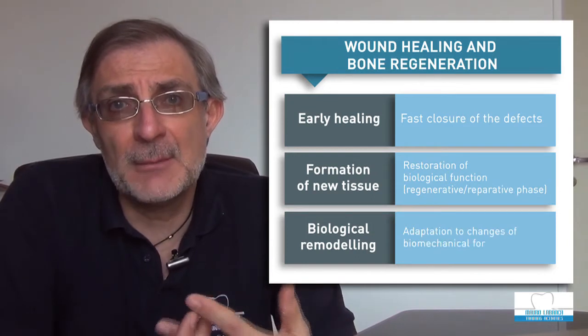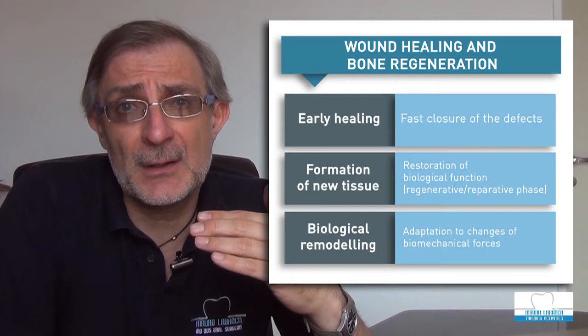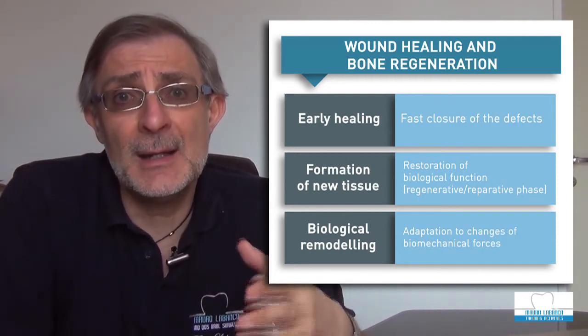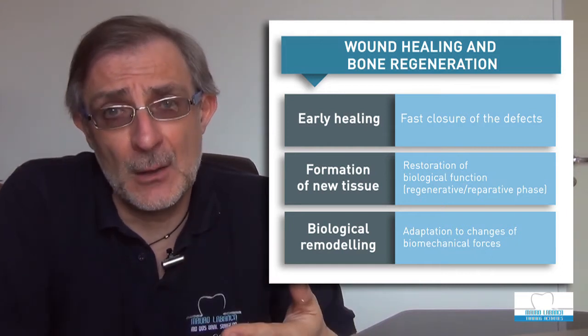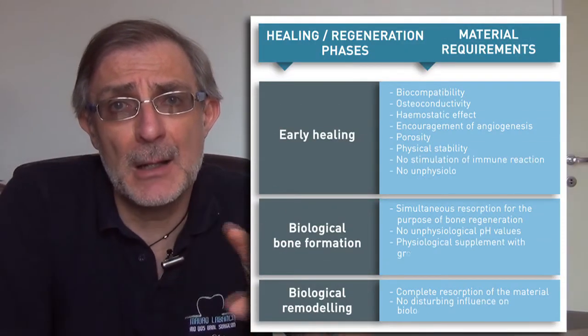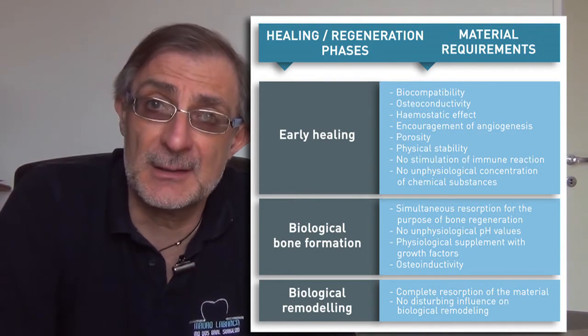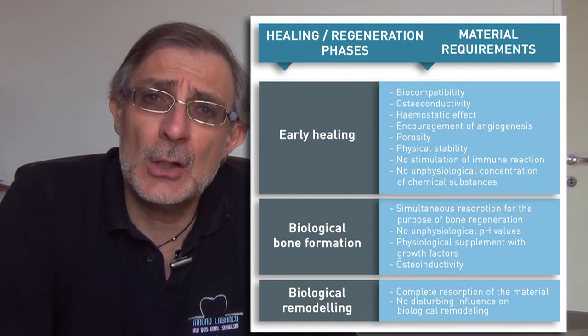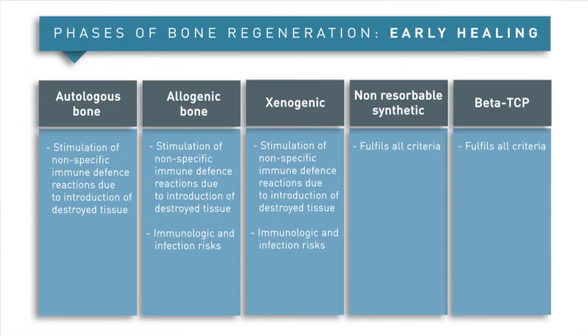Biomaterials interact with the healing processes, especially during the two first healing stages: early healing and the remodeling of bone. Going through the biological moments of the healing process, we can see that even autogenous bone — usually considered the gold standard — is not really the best material in every aspect. Interestingly, beta-tricalcium phosphate, which is a synthetic biomaterial, seems to have all the characteristics we need for good regeneration with a complete and perfect healing of the tissue.